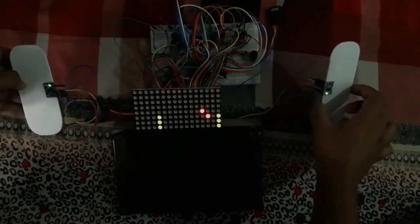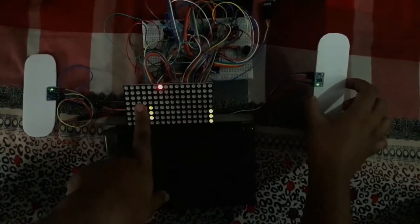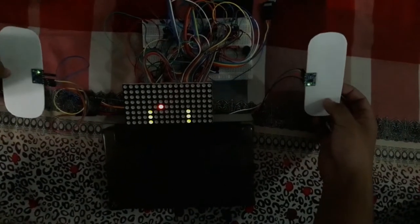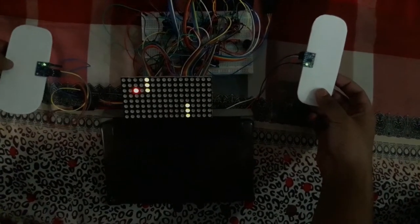For that we have used two 8x8 LED matrices, here is one and here is one glued together. For the control of the bat we have two gyroscopes controlling the flow of the bat, you can see that.